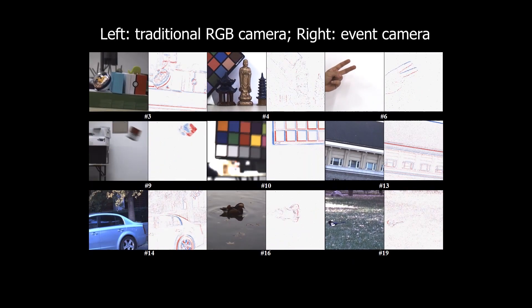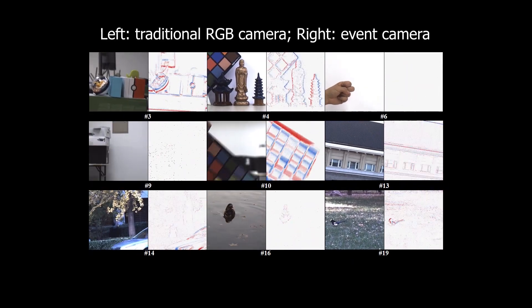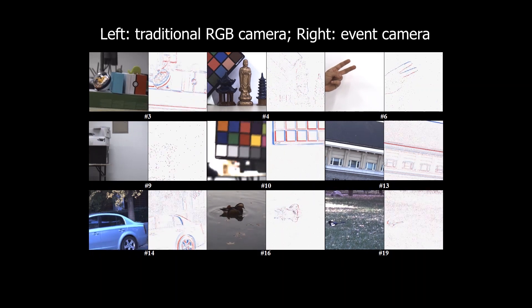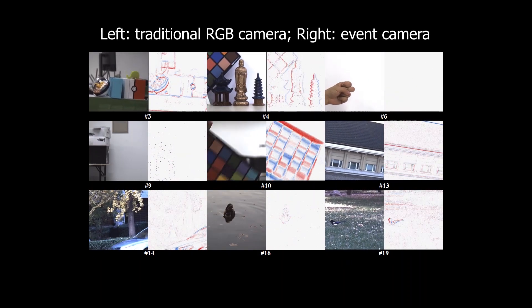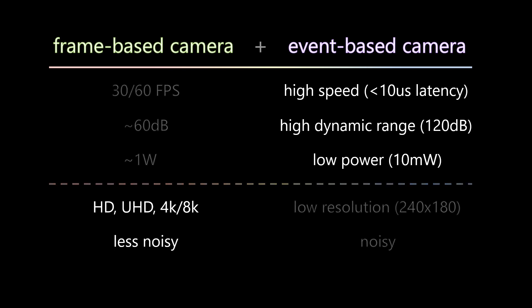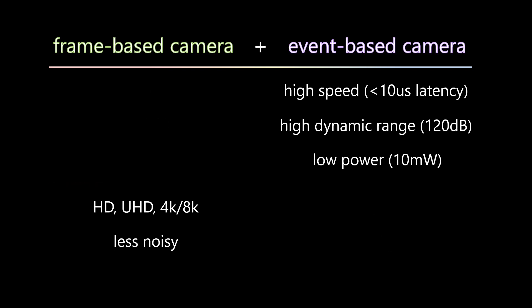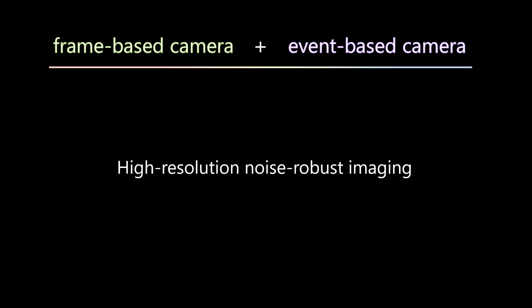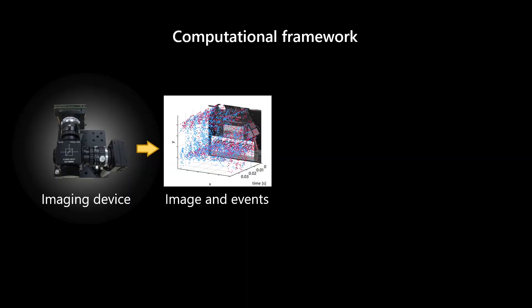Event cameras are novel sensors different from traditional RGB cameras. In this paper, we present a computational imaging system that leverages the benefits from both sides and achieves high-resolution, noise-robust imaging.